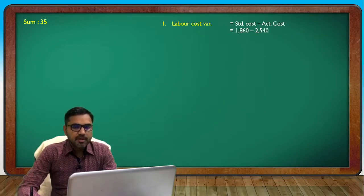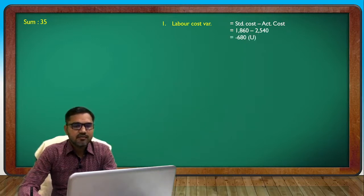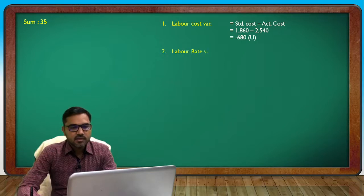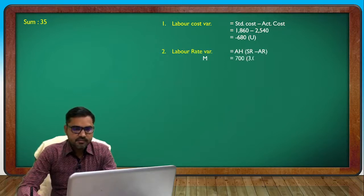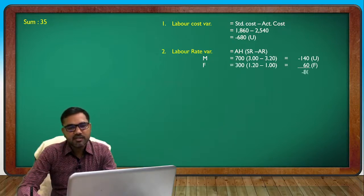Starting the labor cost calculation directly. Writing the variance formula and calculating: minus 680 unfavorable for rate. For rate: minus 3.20 makes 1-140 unfavorable; 65 favorable.